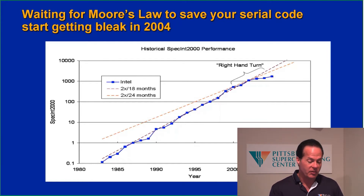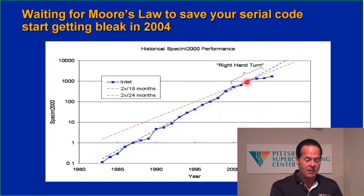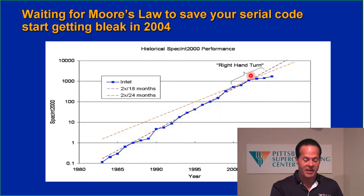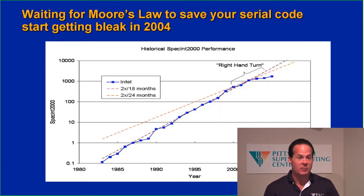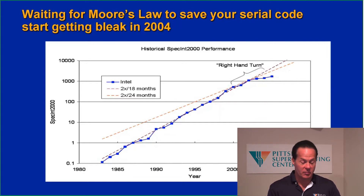Sometime around the year 2004, serial computing kind of plateaued and ceased to get faster from year to year to any significant degree — at least nowhere near the extent that it was previously. Serial computing for the past decade plus has been stuck at roughly the same levels of performance. You can see this most obviously if you look at the clock speeds of the computers that you buy today. There are a couple of gigahertz, plus or minus.